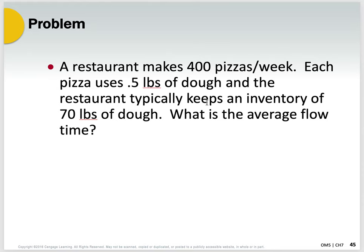Problem three: a restaurant makes 400 pizzas per week. Each pizza uses half a pound of dough to make the crust. The restaurant typically keeps an inventory of 70 pounds of dough. What is the average flow time? They've given you R and WIP, and you have to find T. I'm asking you to stop the video now and try to solve these problems on your own before I work through them.